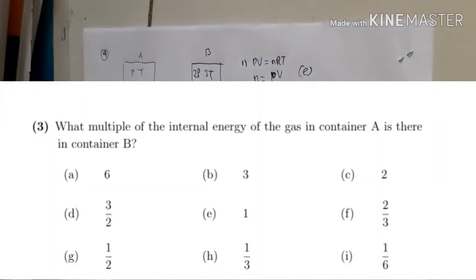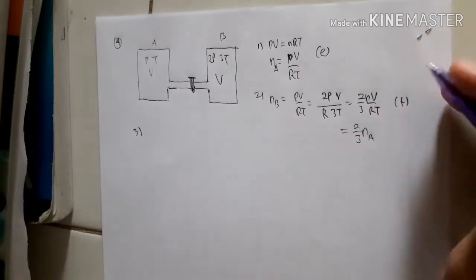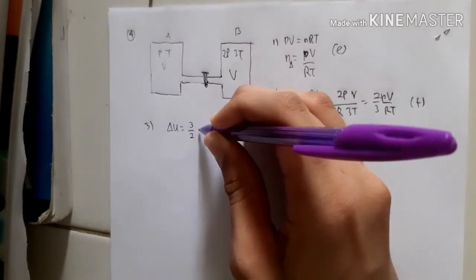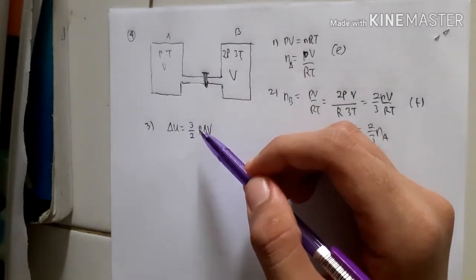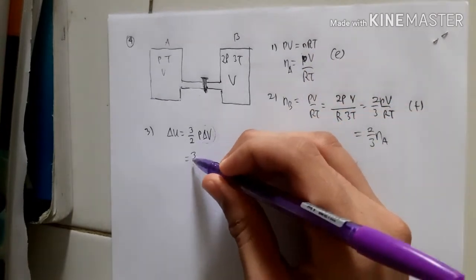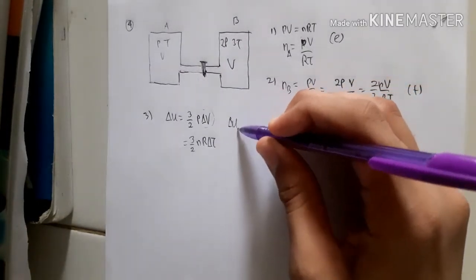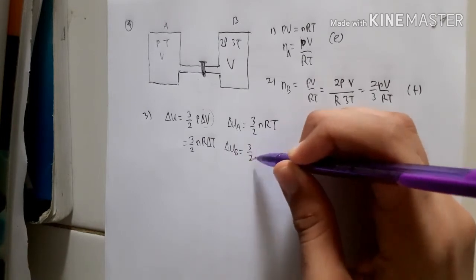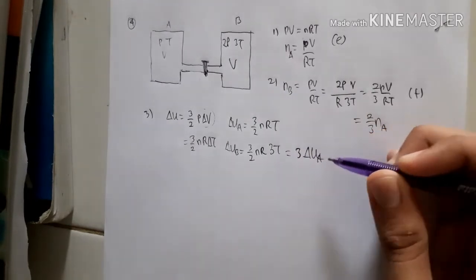For number three, we find what multiple of the internal energy in container A is present in container B. The internal energy formula is (3/2)PV, where 3/2 applies for a monatomic ideal gas. Since PV = nRT, the internal energy is (3/2)nRT. Container B has temperature 3T versus T in container A, so the internal energy in B is three times that in A. The answer is option B.